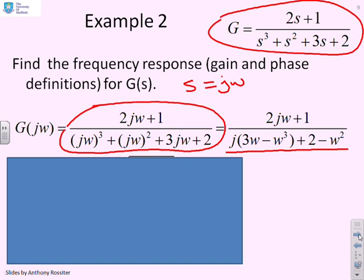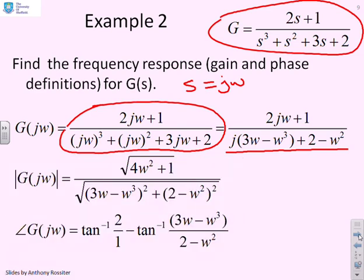For the gain, using Pythagoras for the numerator, we get √(4ω² + 1), and for the denominator, √((3ω - ω³)² + (2 - ω²)²). What I'm going to write here, in case it's not obvious: not nice. Yes, you can write it down, but if I asked you to do that in your calculator, you're beginning to say yuck.